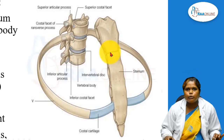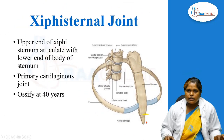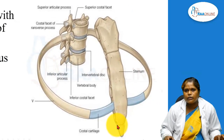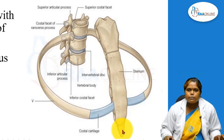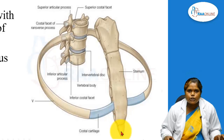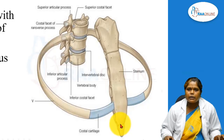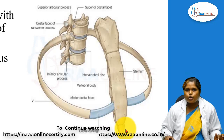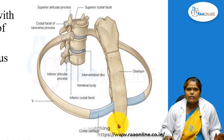Now coming to the second joint — the xiphi-sternal joint. It is between the xiphisternum and the body of sternum. The upper articulating surface is the lower end of the body of sternum and the lower surface is the upper end of the xiphisternum. This is an exception: though it is a midline joint, it is a primary cartilaginous joint because no movement is needed here. After the age of 40, this xiphi-sternal joint will be completely ossified.